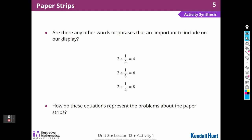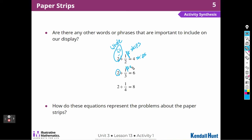How do these equations represent the problems about the strips of paper? We took the two-foot long strip and cut them into half-foot strips, and we got four strips. Then again we had two whole feet, cut them into third-foot strips, and got six. And the same thing with cutting them into fourths. The two is for the two feet of paper, and the fractions show the size of the pieces the paper is being cut into. The four, six, and eight are the number of pieces of colored paper.